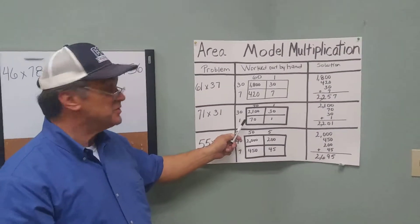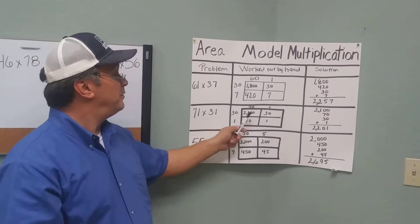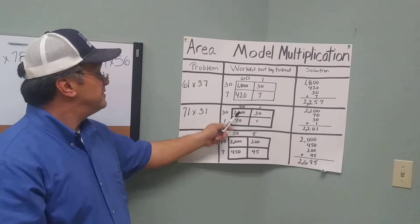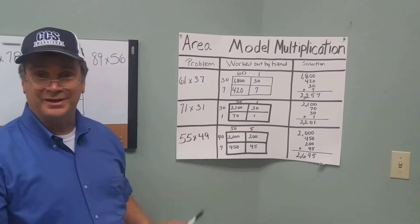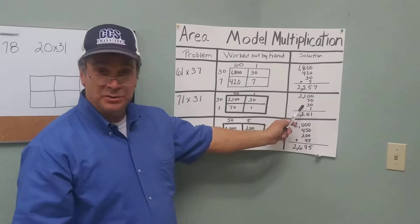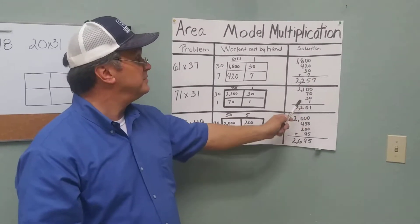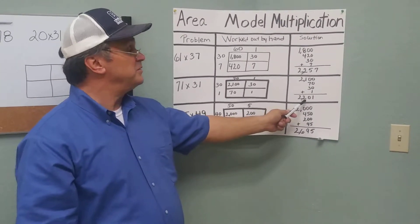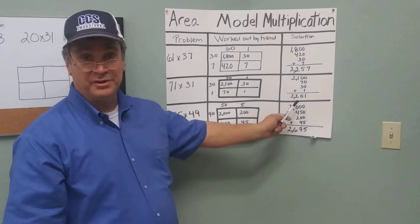Adding these numbers together, we get 30 times 70 is 2,100. 30 times 1 is 30, 70 times 1 is 70, and then 1 times 1 is 1. Then we come over to our solution side, adding all those numbers up: 2,100, 70, 30, and 1. We come up with 2,201.